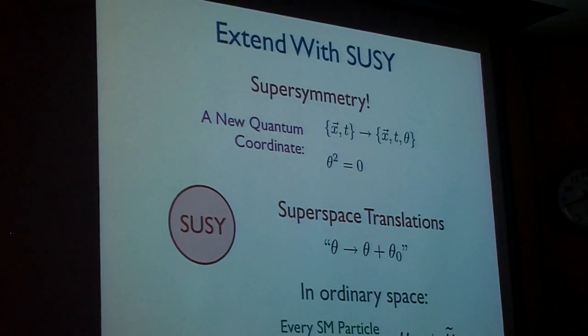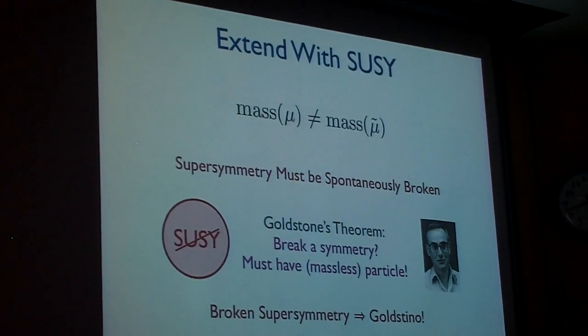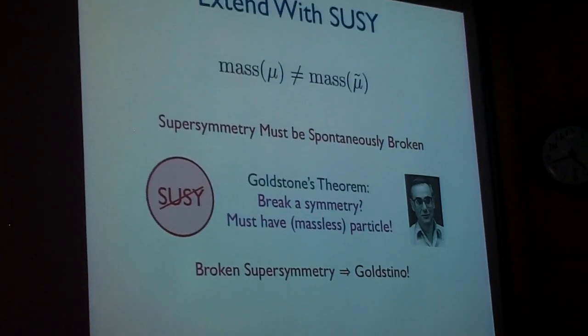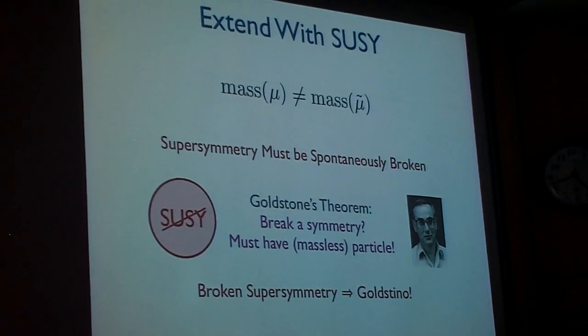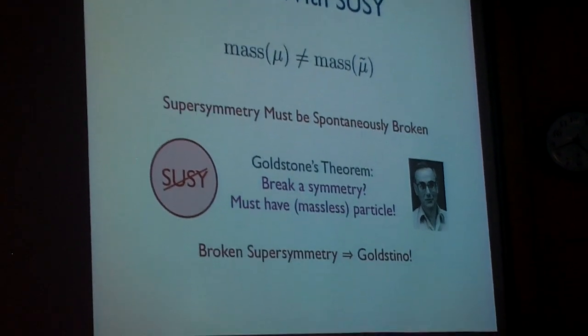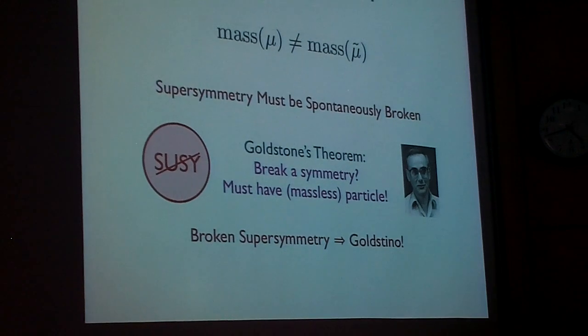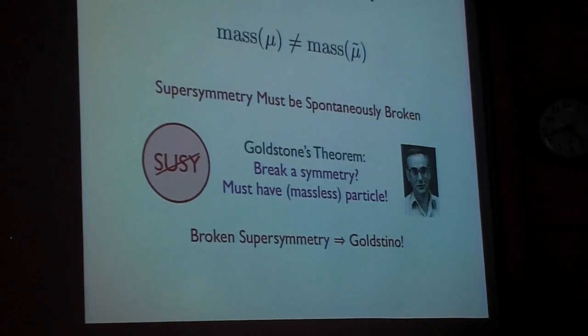Now, we know this can't be the case, because, well, we've seen the muon, we haven't seen the smuon yet. That means that supersymmetry can't be a symmetry that's good to arbitrarily low energies. So you might say, ah, dispense with supersymmetry, who cares about it? And that's one possibility.